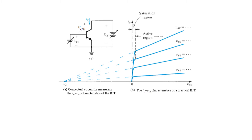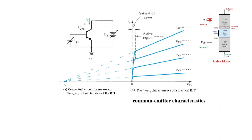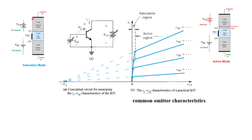Now let's relate this to the common emitter characteristics. The active region is where the base-emitter junction is forward biased and the collector-base junction is reverse biased. When both junctions are forward biased, the current suddenly increases — this region is called the saturation region, where the transistor acts like a closed switch.